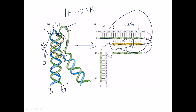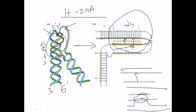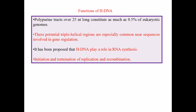This triple helix can be formed not only by the interaction of two separate DNA molecules, but also using the same DNA strand. By slightly bending the DNA strand, we can form this kind of triple helix, and this kind of DNA is called H-DNA. This H-DNA is formed because of intra-strand interactions.